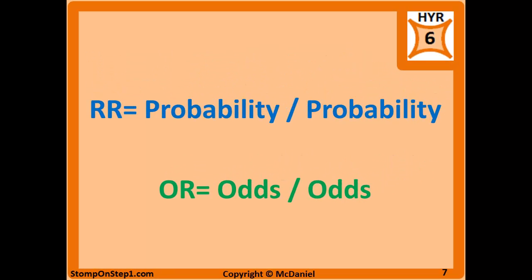The reason we need to understand the difference between probability and odds is because relative risk is calculated with probabilities and odds ratios is calculated with odds.